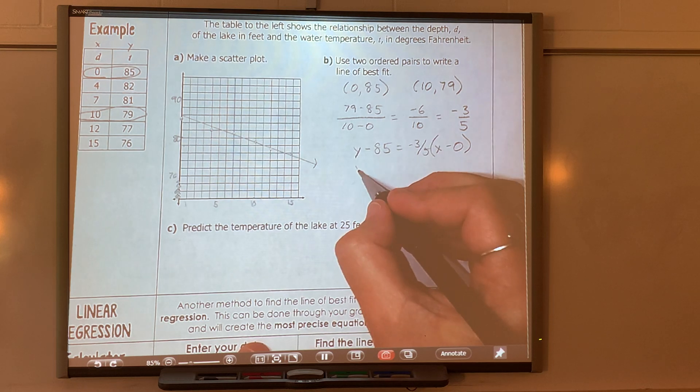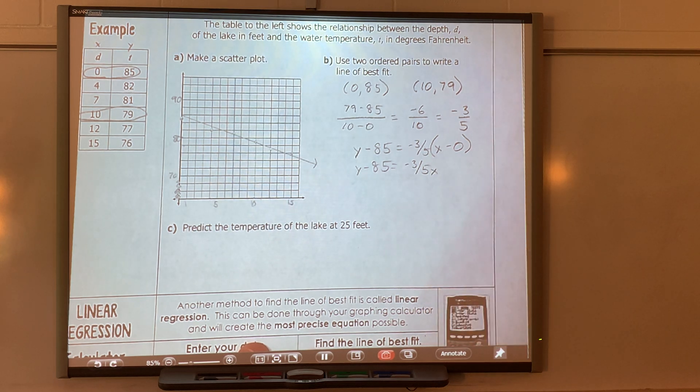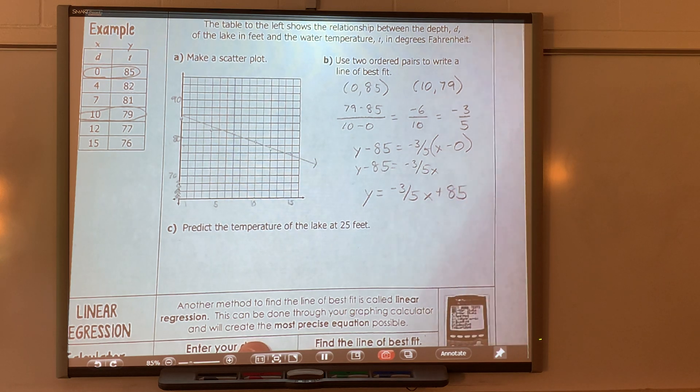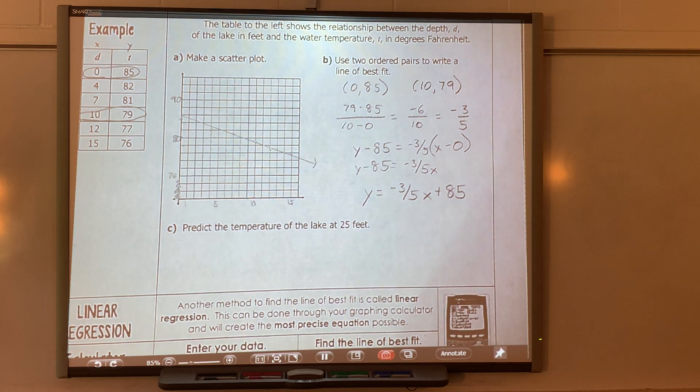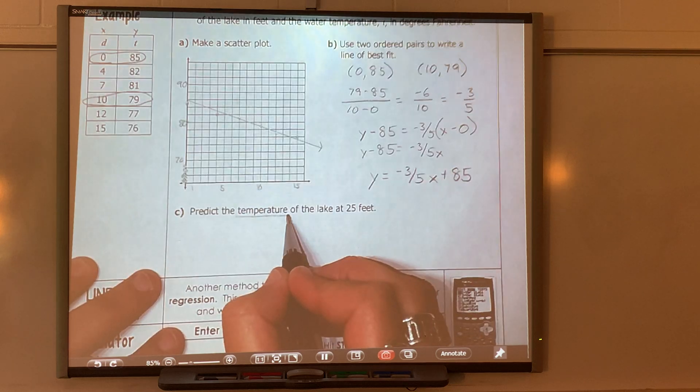When I want to write my equation, I have Y minus, and I can really pick either point, but which one's easier? The one that has the zero in it. So I have Y minus 85 equals negative three-fifths times X minus 0. Y minus 85 stays, and then I have negative three-fifths X. When I multiply negative three-fifths times zero, I have nothing. Now I add 85 to the other side, so Y equals negative three-fifths X plus 85. Now I have the line of best fit based on the information given.